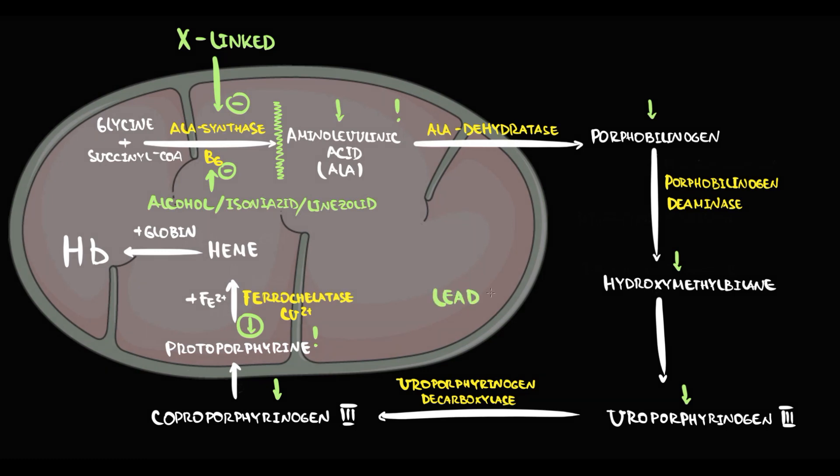We also have two additional factors that cause sideroblastic anemia. Lead poisoning also causes sideroblastic anemia because lead inhibits two crucial enzymes: ALA-dehydratase and ferrochelatase. And the last factor is copper deficiency. Copper deficiency decreases the activity of ferrochelatase because ferrochelatase cannot function without its cofactor.